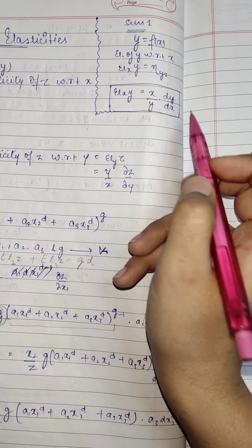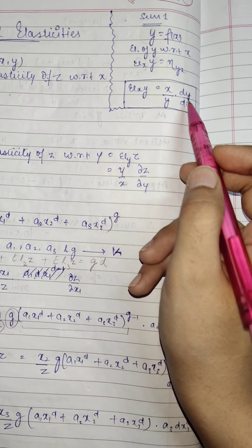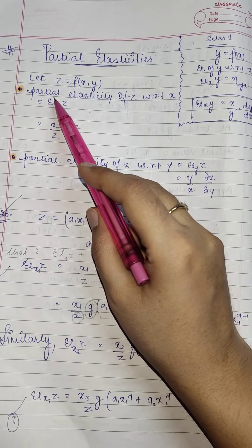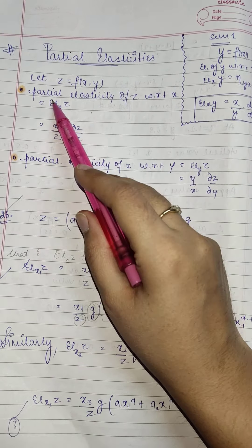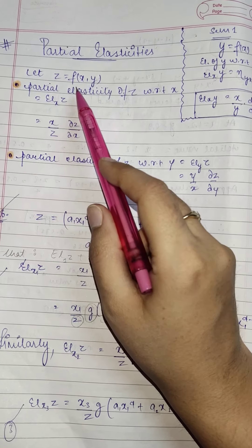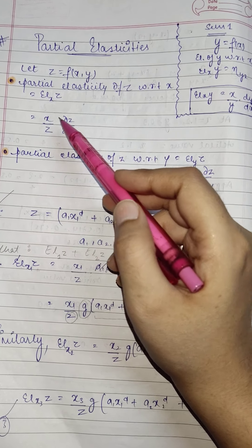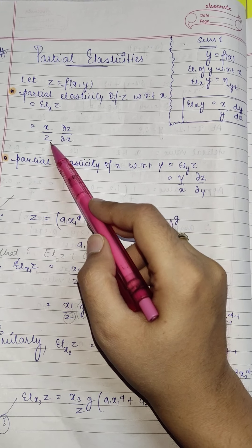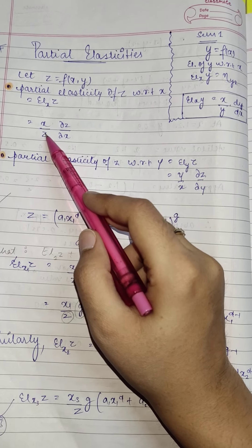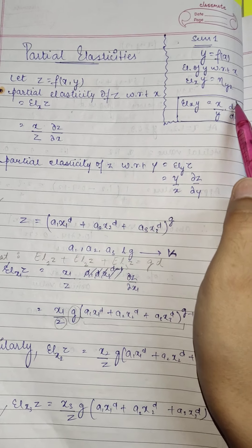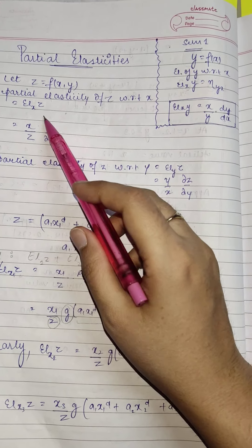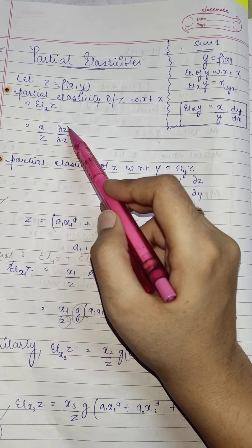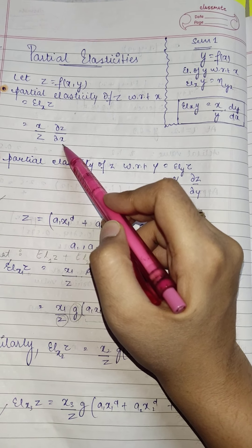Now we're going to extend this information to a function of two variables: z equals f of x, y. So firstly, partial elasticity of z with respect to x would be the same way. Formula remains the same: x upon the dependent variable, that is x upon z, times—now instead of full derivative, now we know that z is a function of two arguments x and y—we will write partial derivative del z upon del x.